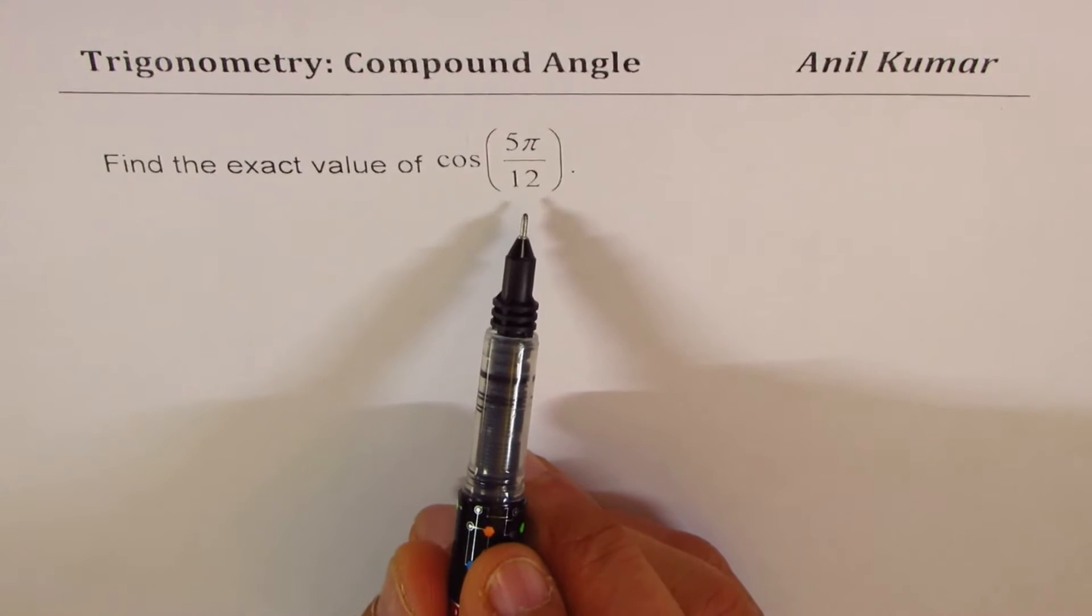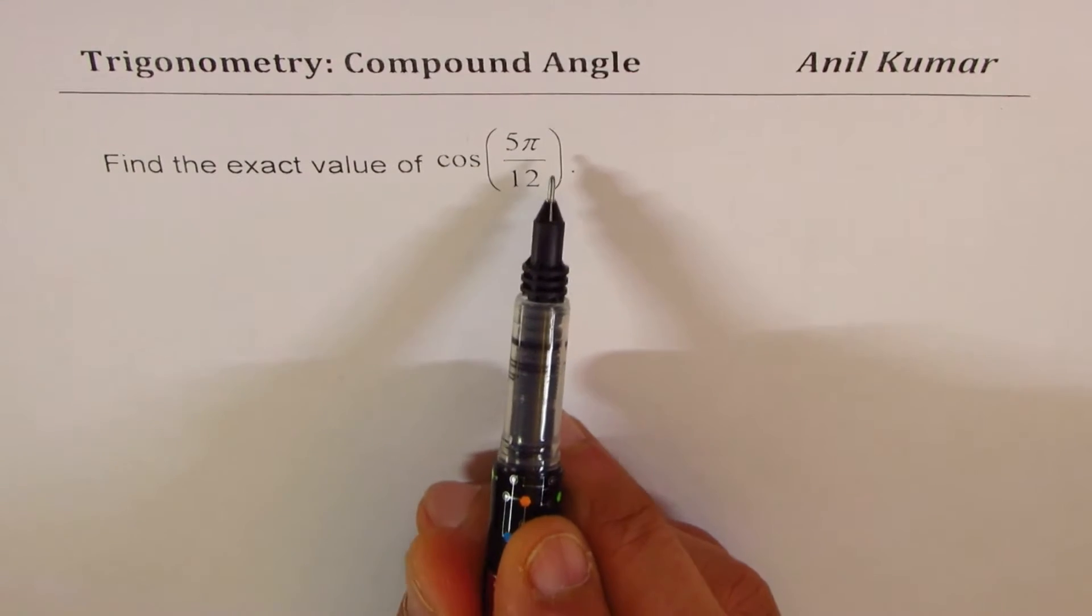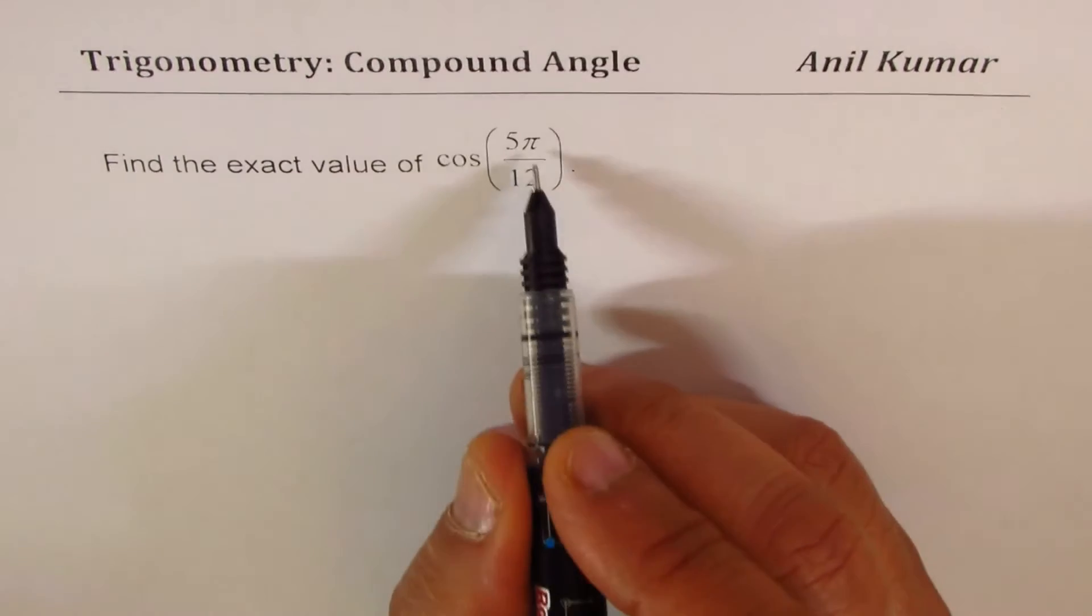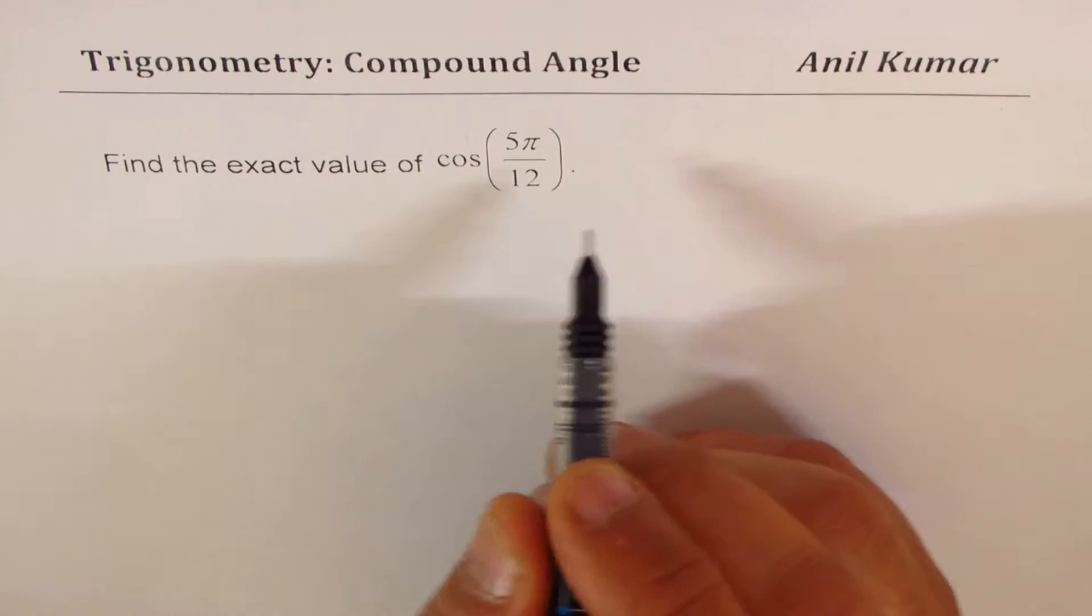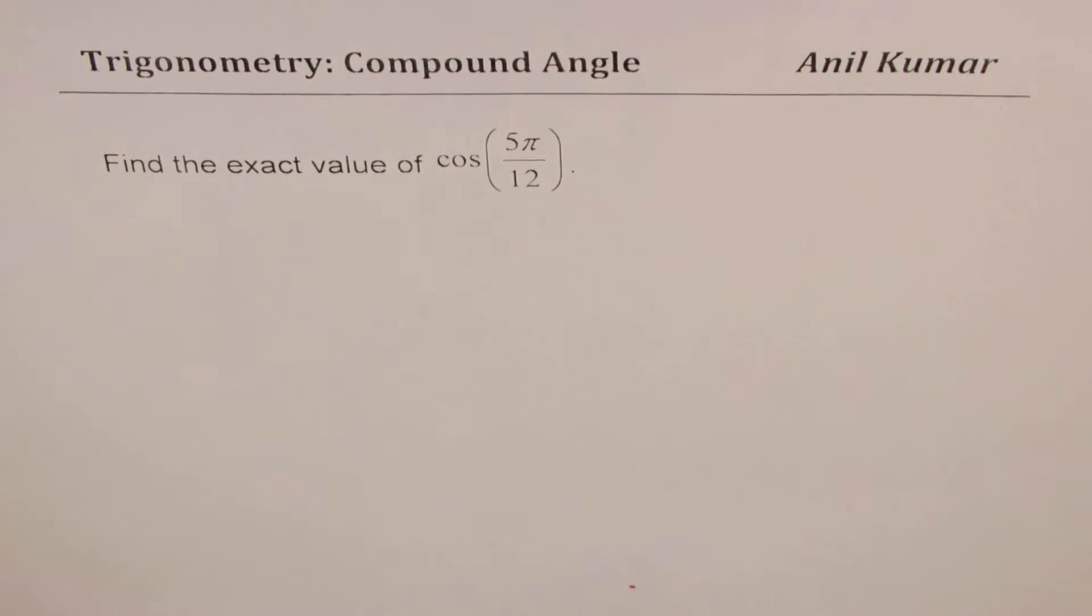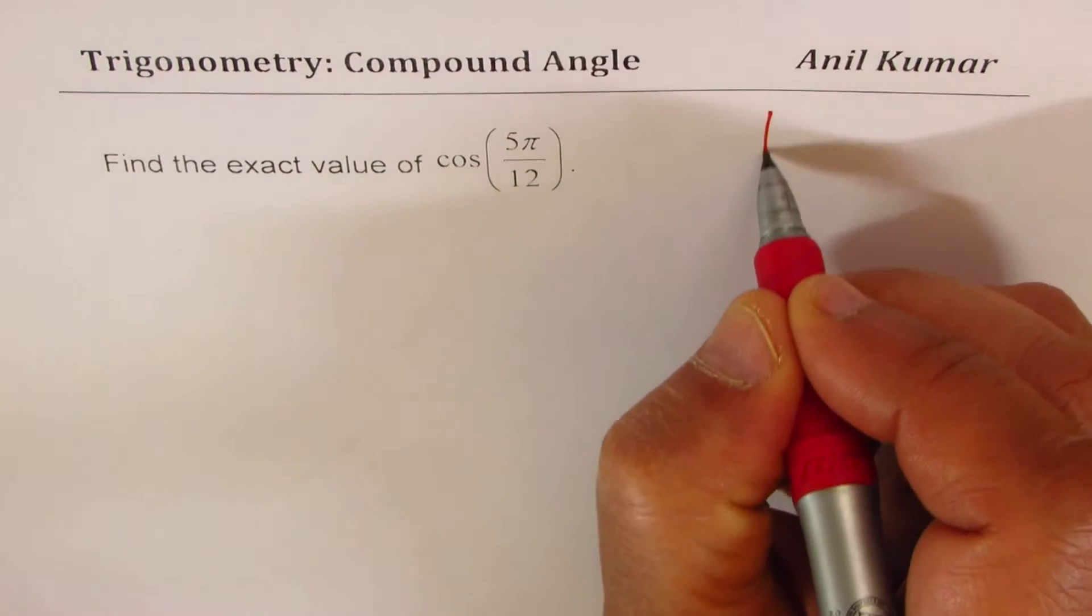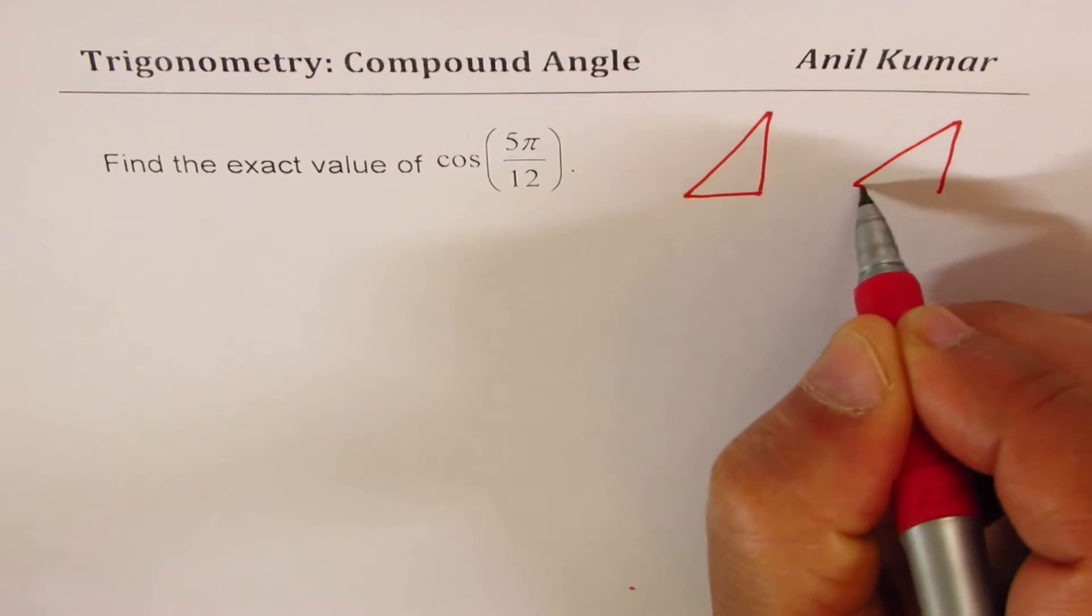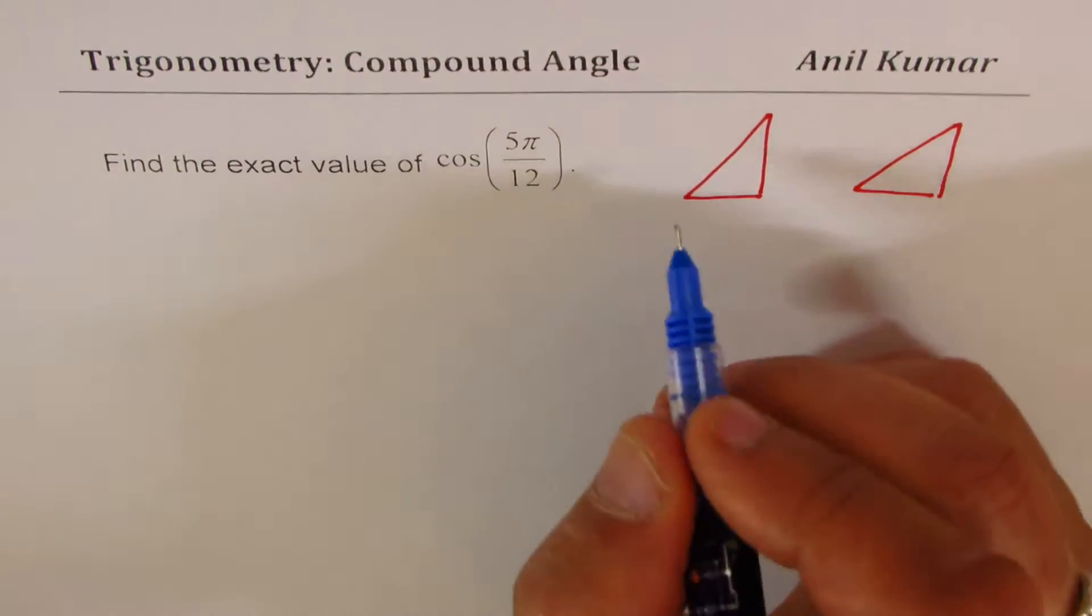Now to find the exact value we may have to split this angle as a combination of two so that we could use the known exact values, especially the special triangles which we work with. Let me sketch those special triangles first and then we'll talk about it.